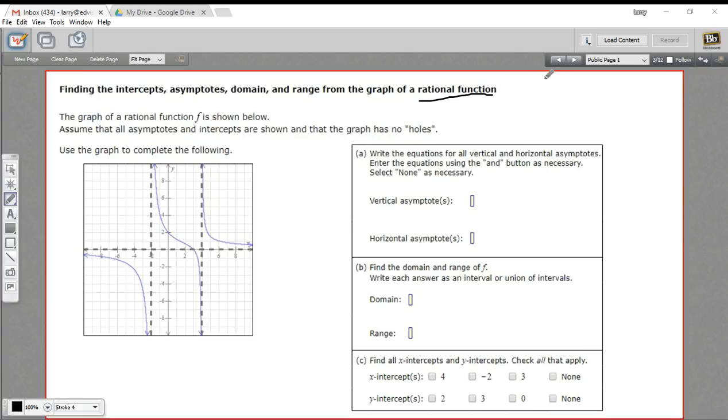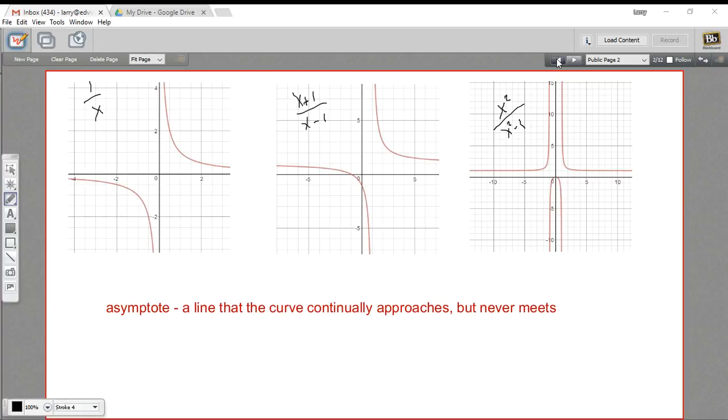Before we start this, I want to take a look at some rational functions. What makes a rational function a rational function is that you've got a fraction and an x is on the bottom of the fraction somewhere.